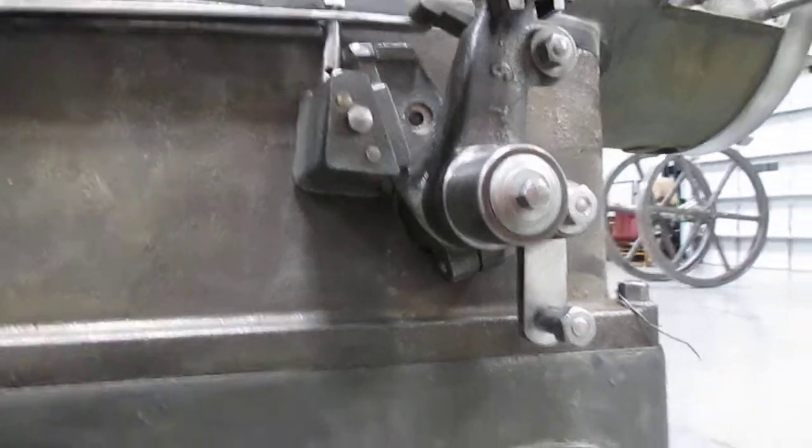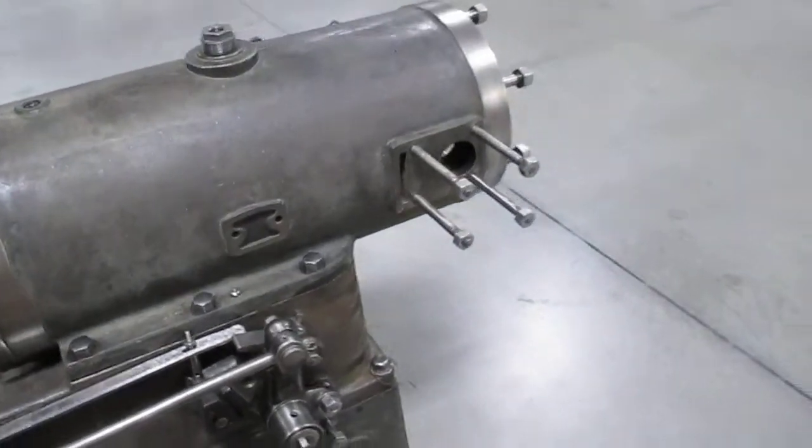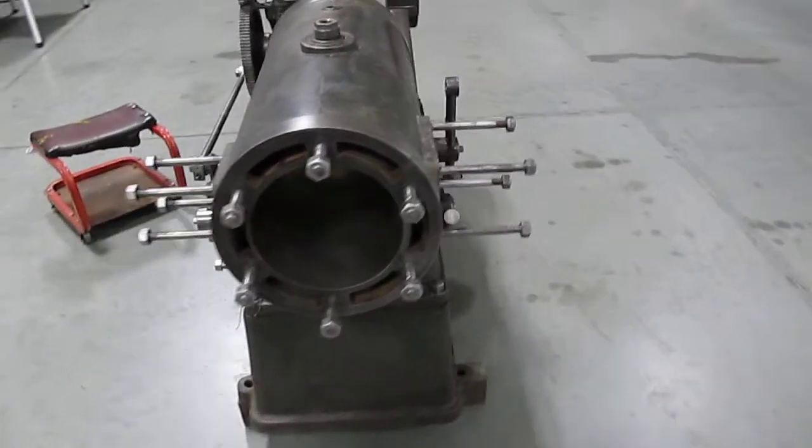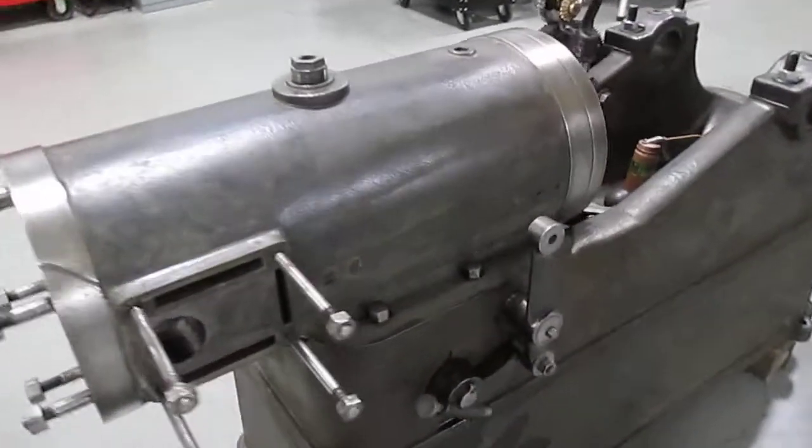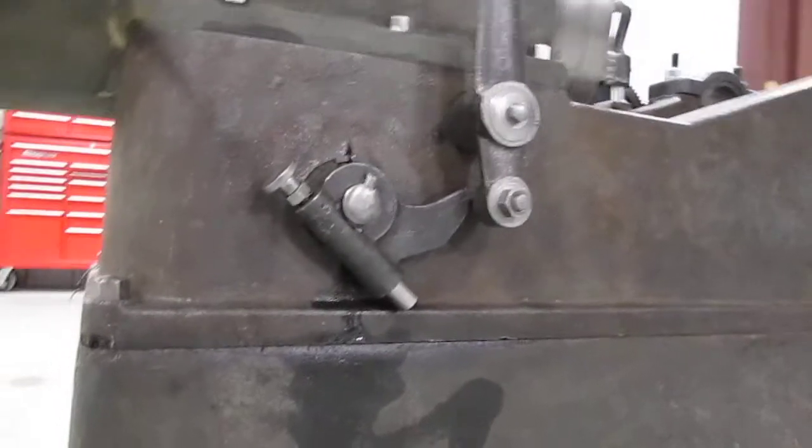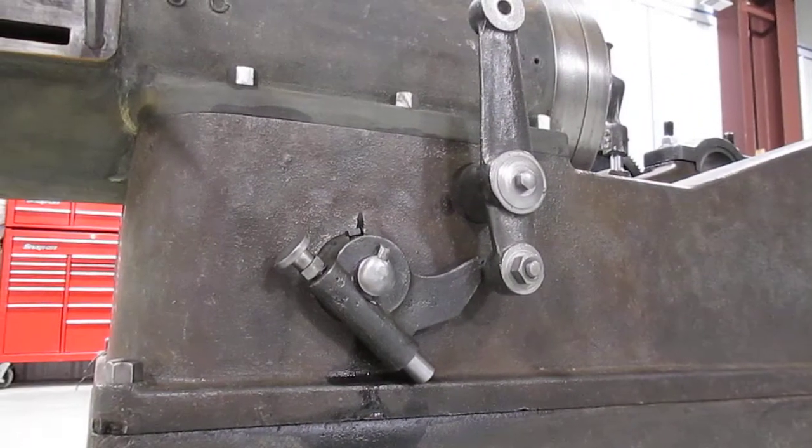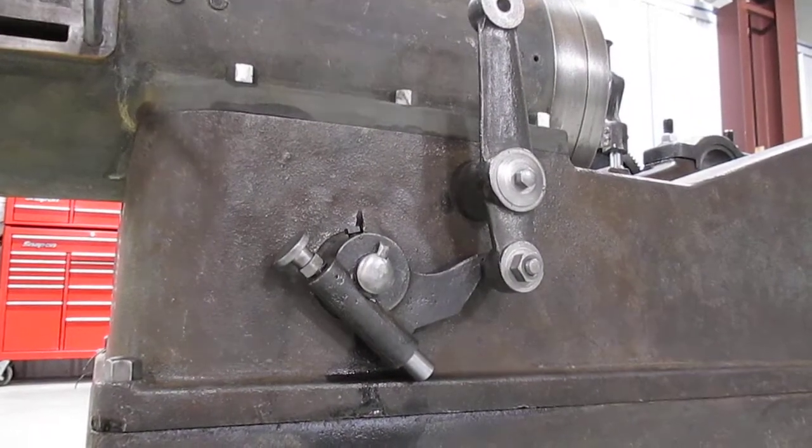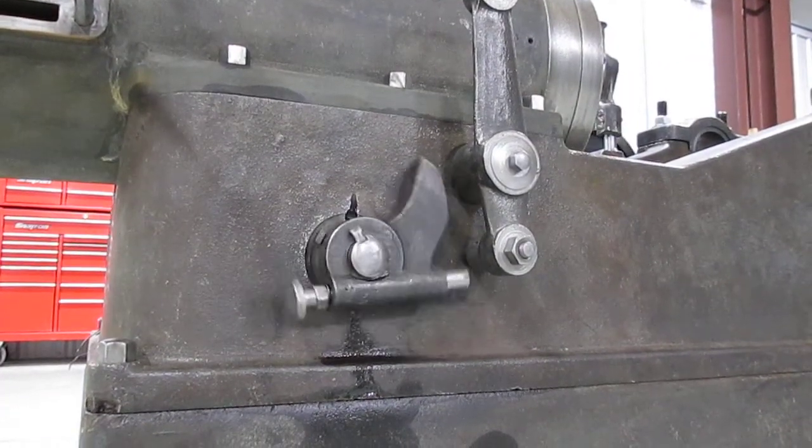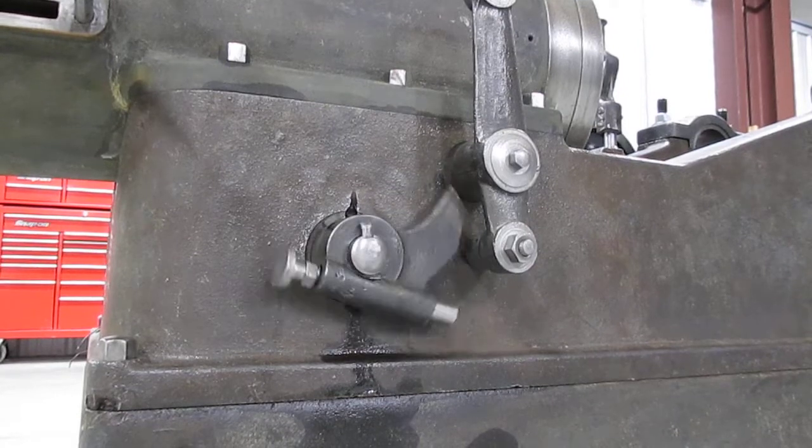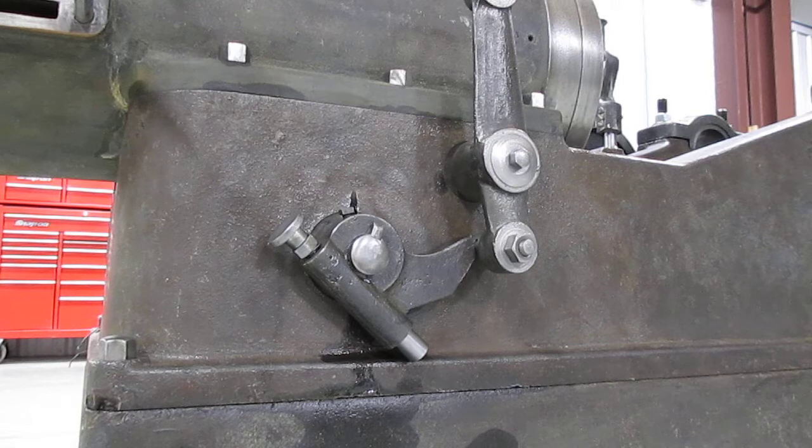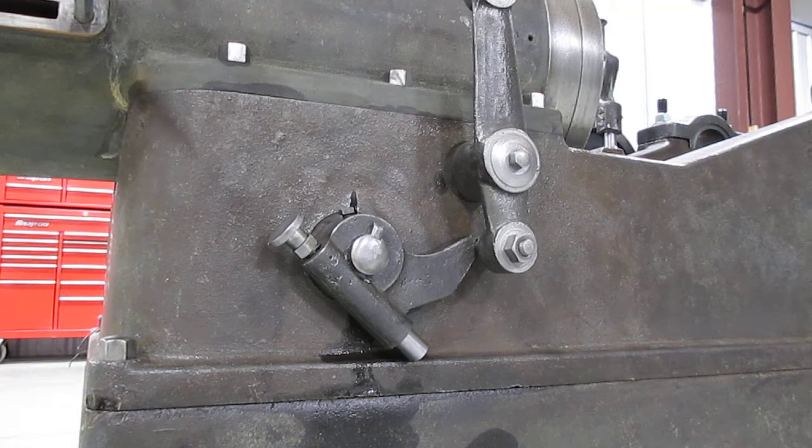That shaft there goes all the way around to the other side of the engine. Right here, that ramp works on that roller. I'll show you how it starts and stops. There, it's left holding the valve open, and it'll pick up again.